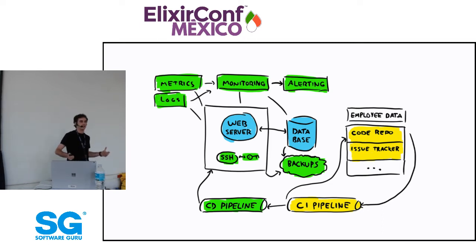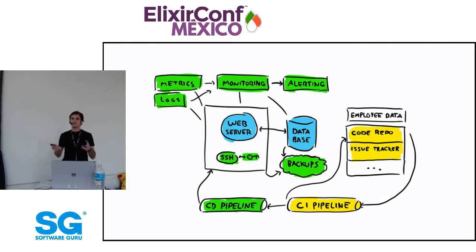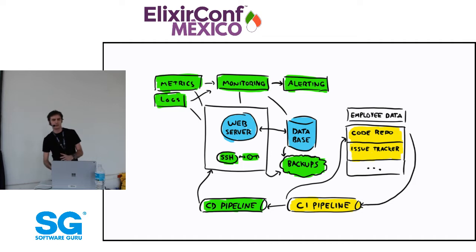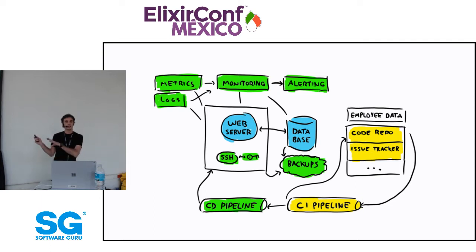By extension, we need the yellow components related to development. If you have code to push, it has to live somewhere — not in an email inbox or pushed via FTP. You might have a code repository, an issue tracker, continuous integration, a list of developers allowed to work on it, and all of that. That starts to look more like what our system actually is.